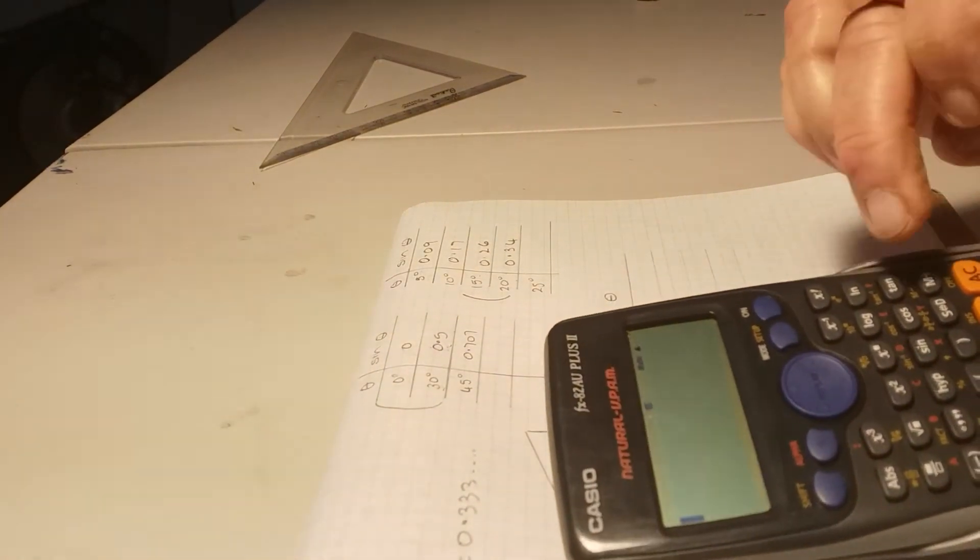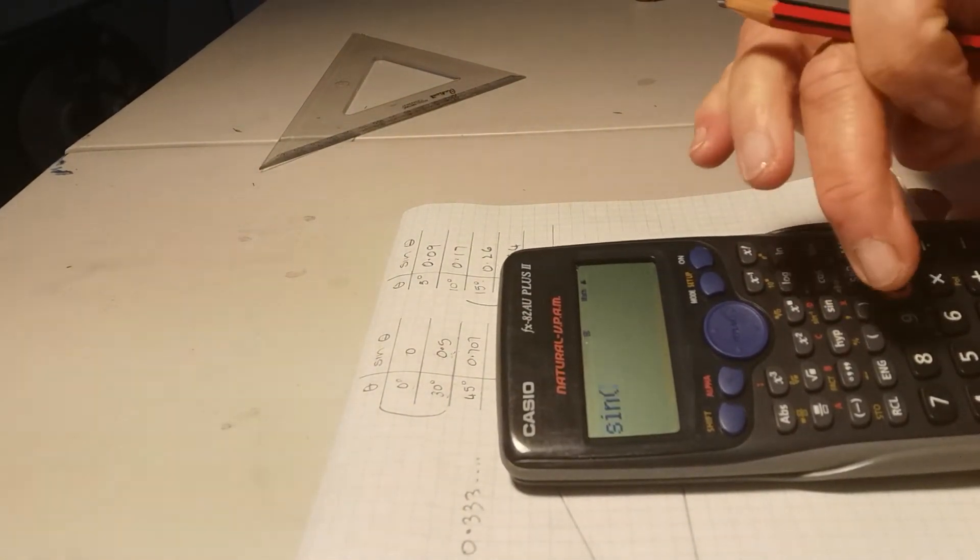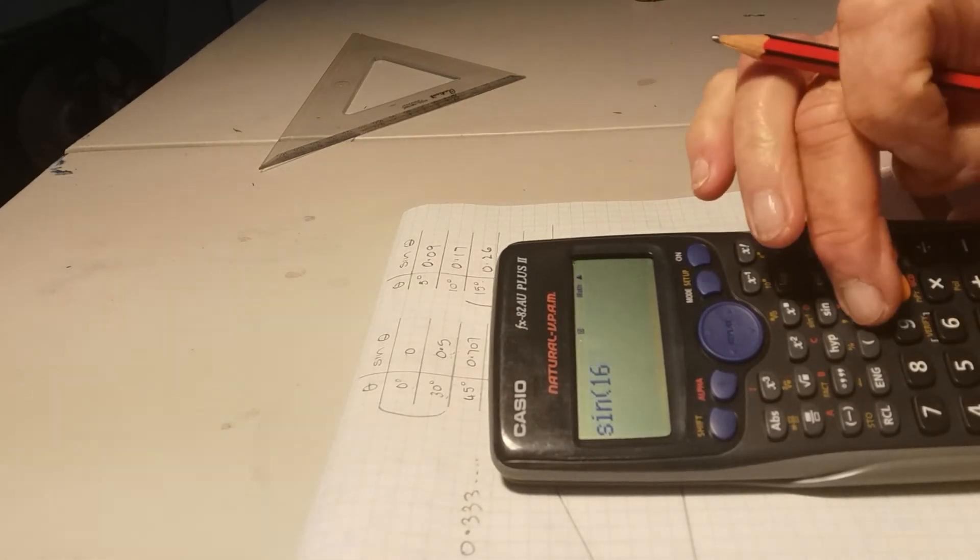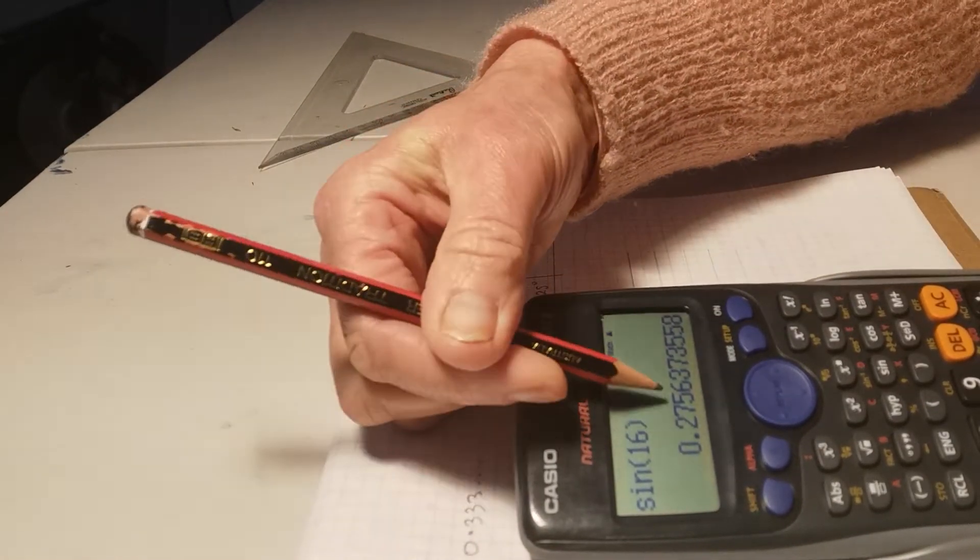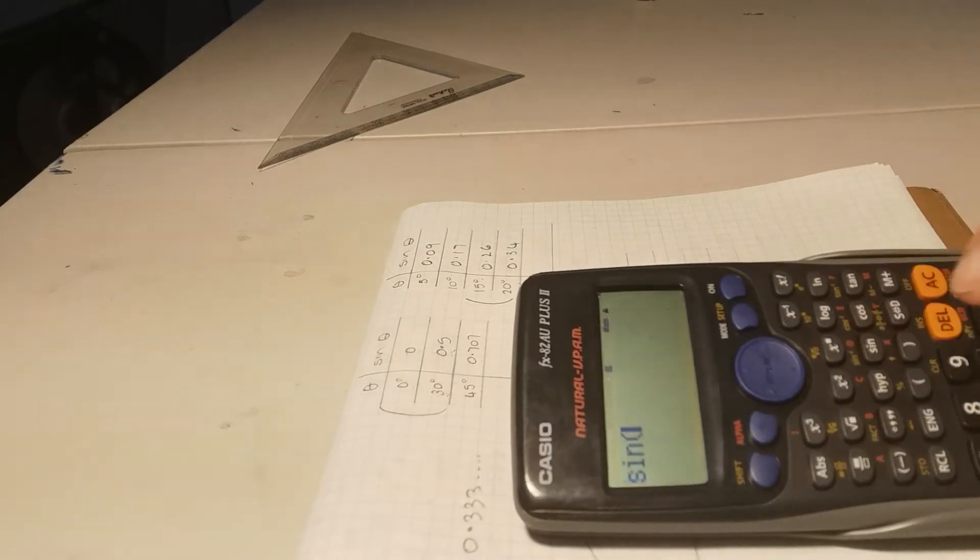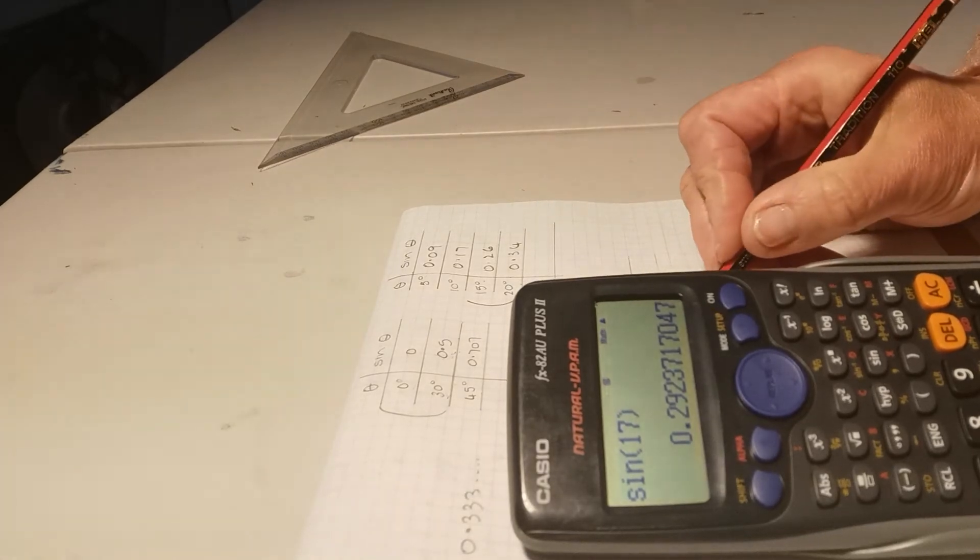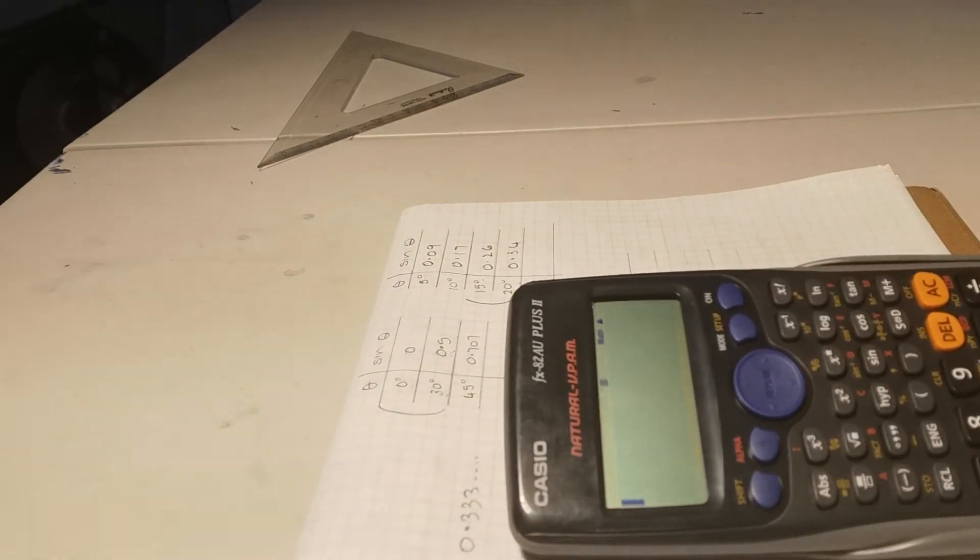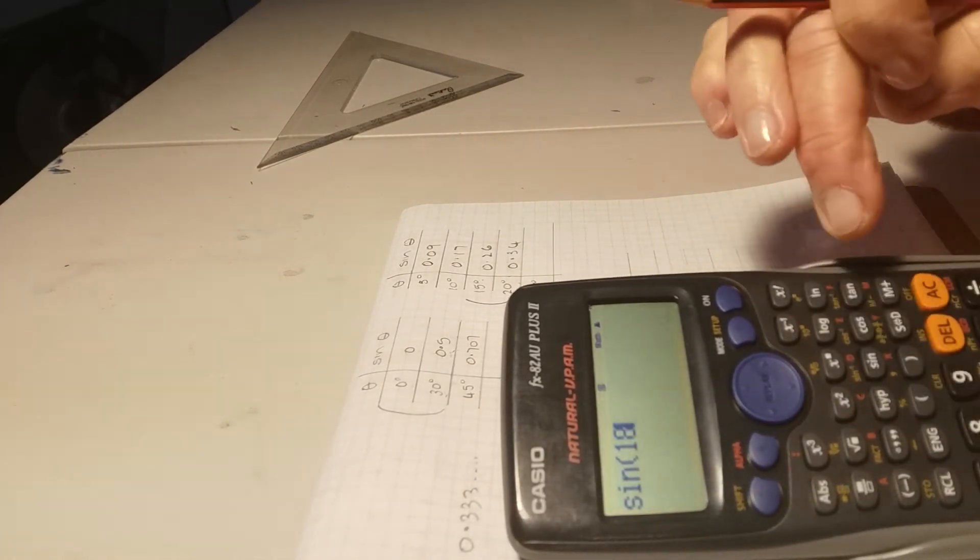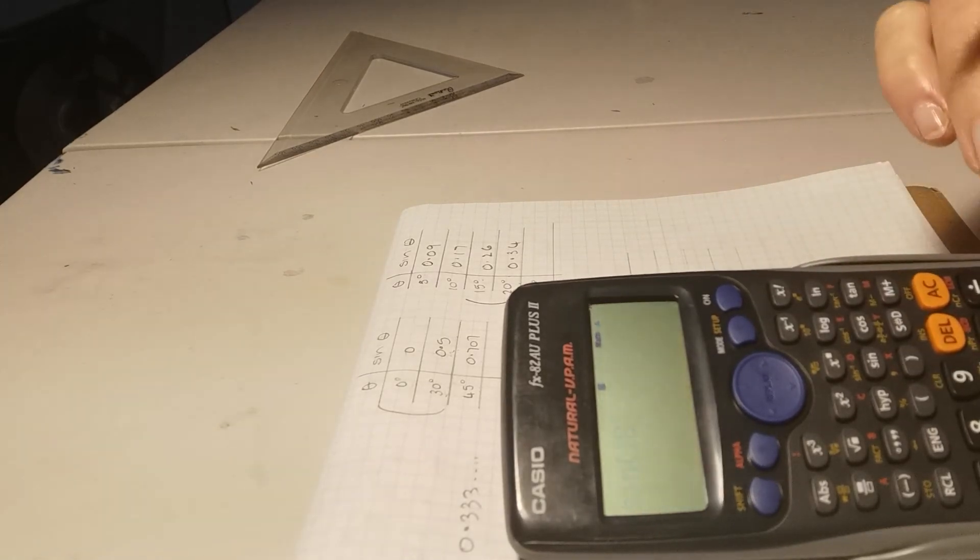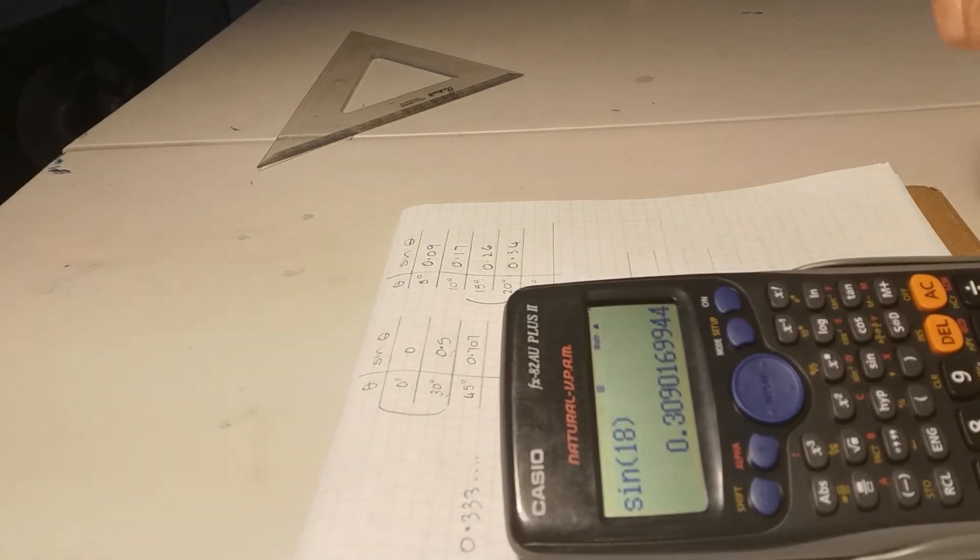Let's try those. So going through those, we've got sine of 16 degrees is 0.28, rounding to two decimal places. Sine of 17 degrees is 0.29, getting very close now. Sine of 18 degrees is 0.31.